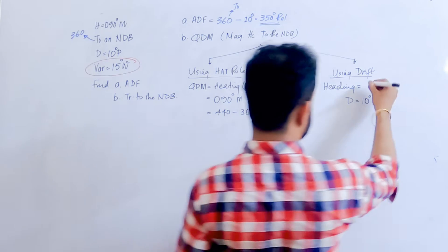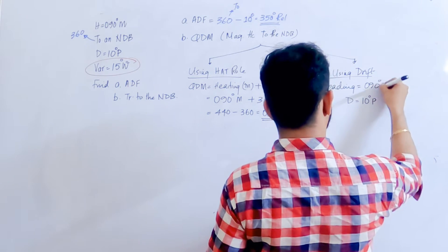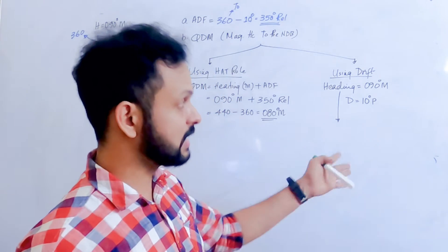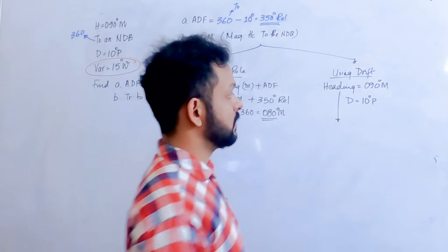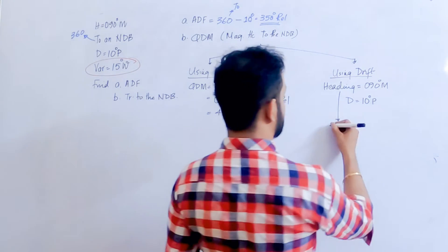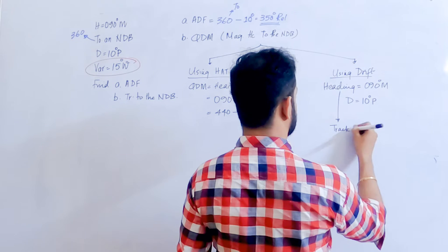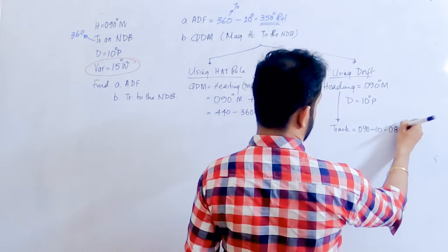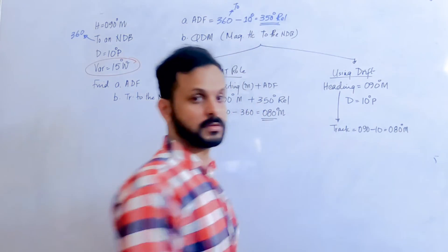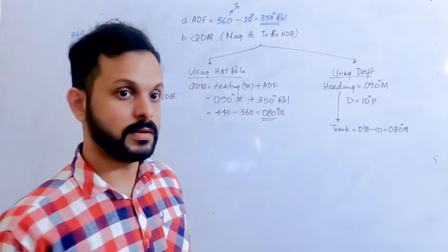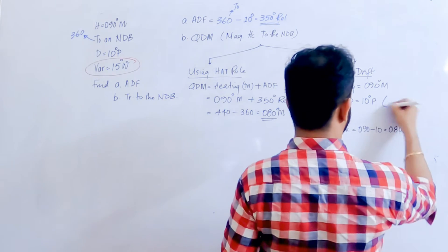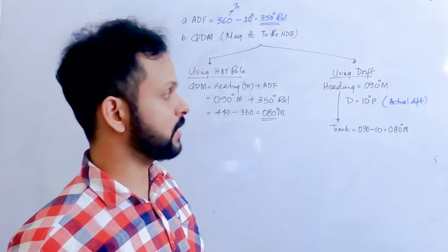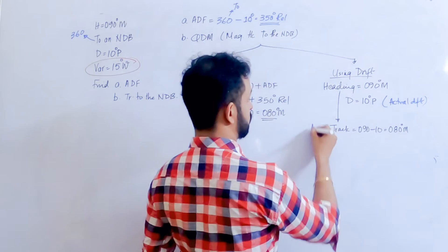So what is the heading? The heading is 090 degrees. Applying 10 degrees of port drift — since the track is to the port of the heading — the track will have a lower magnetic value. Therefore the track is 090 minus 10 equals 080 degrees magnetic. The drift derived from actual conditions gives an actual track; if derived from planned drift, it will be a planned track.